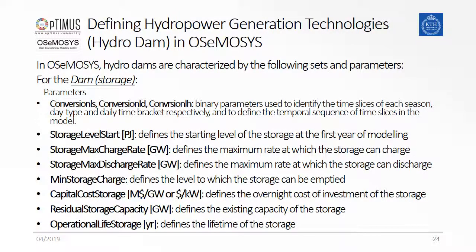After defining the necessary sets, the necessary parameters need to be defined. The conversion LS, conversion LD, and conversion LH are used to indicate which time slice belongs to which season, day type, and daily time bracket respectively. Furthermore, there are the storage-specific parameters: storage level start, storage max charge rate, and min storage charge. These are used to characterize the technical specifications of the storage. Similar to the technologies, storage has the parameters capital cost storage, residual storage capacity, and operational life storage, which allow consideration of the storage independently from the charging and discharging technology.